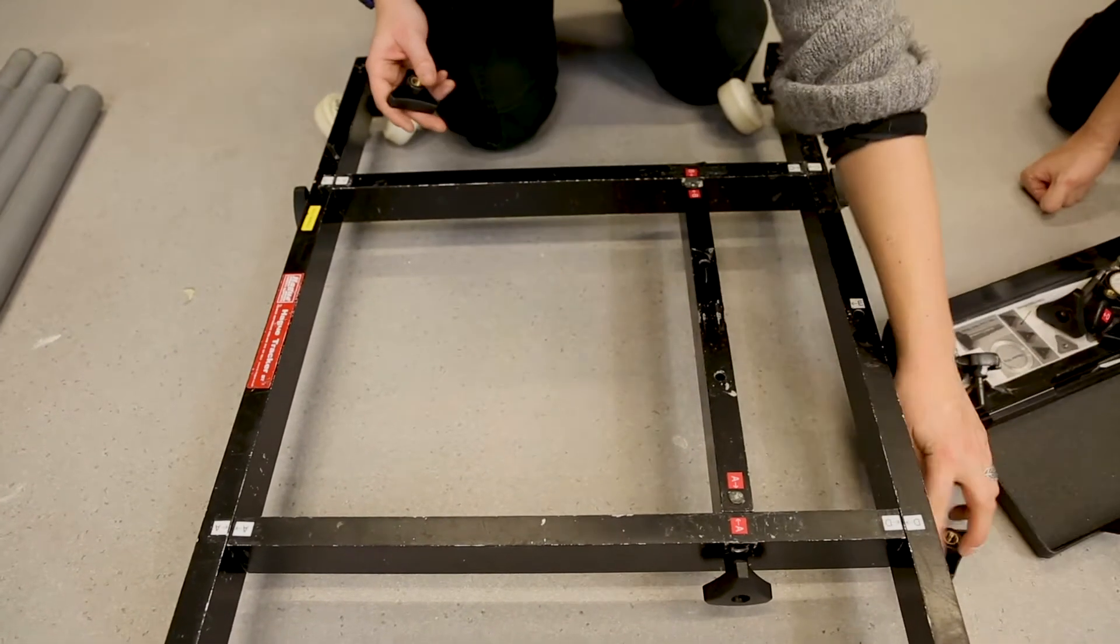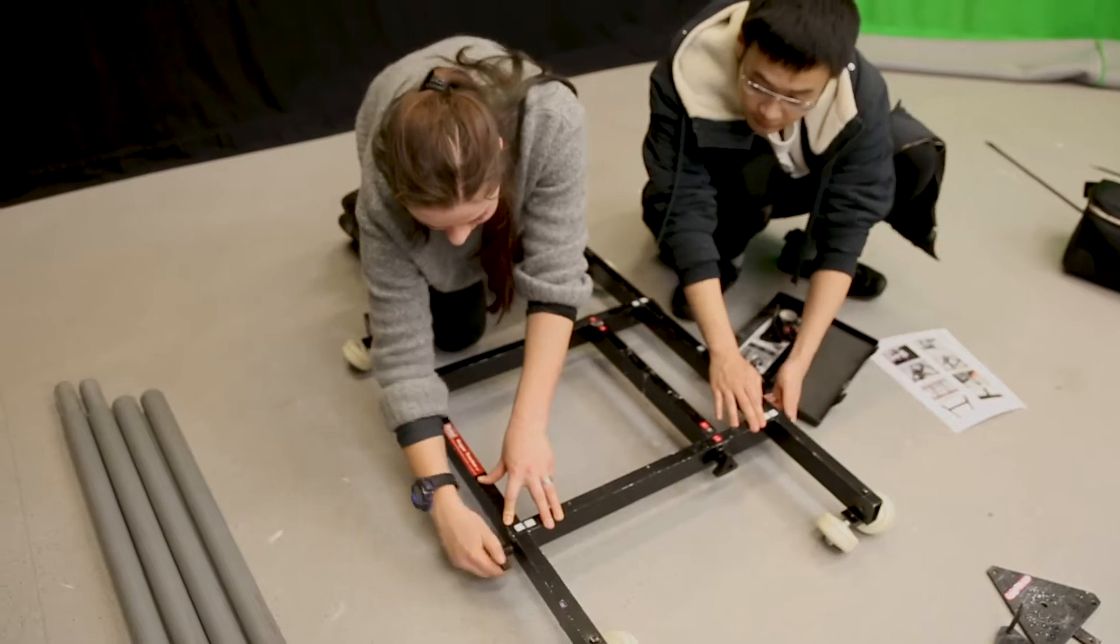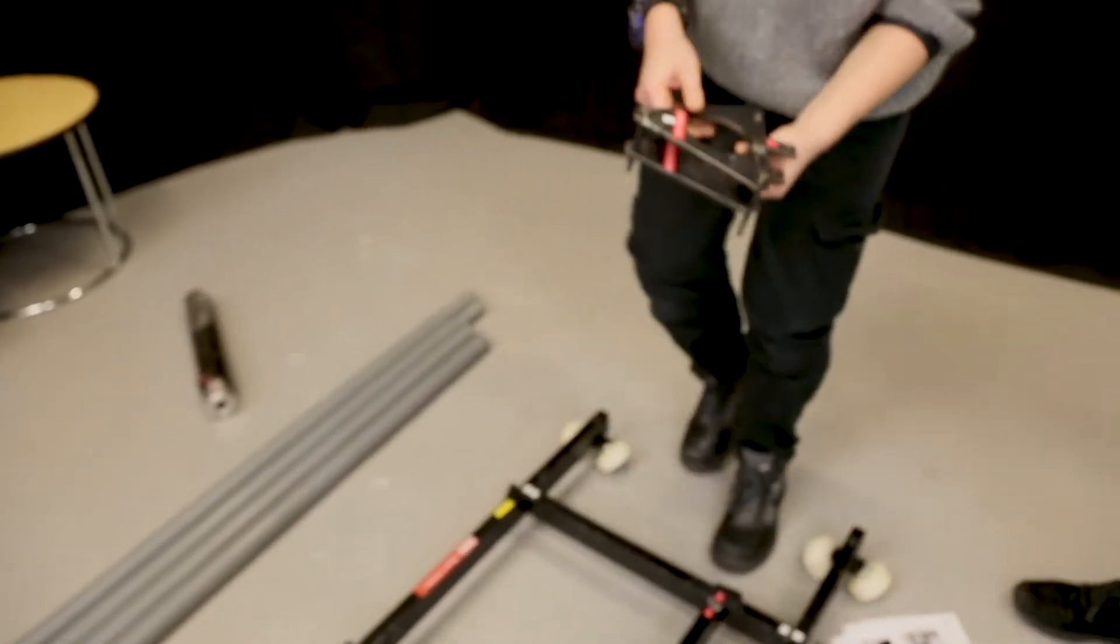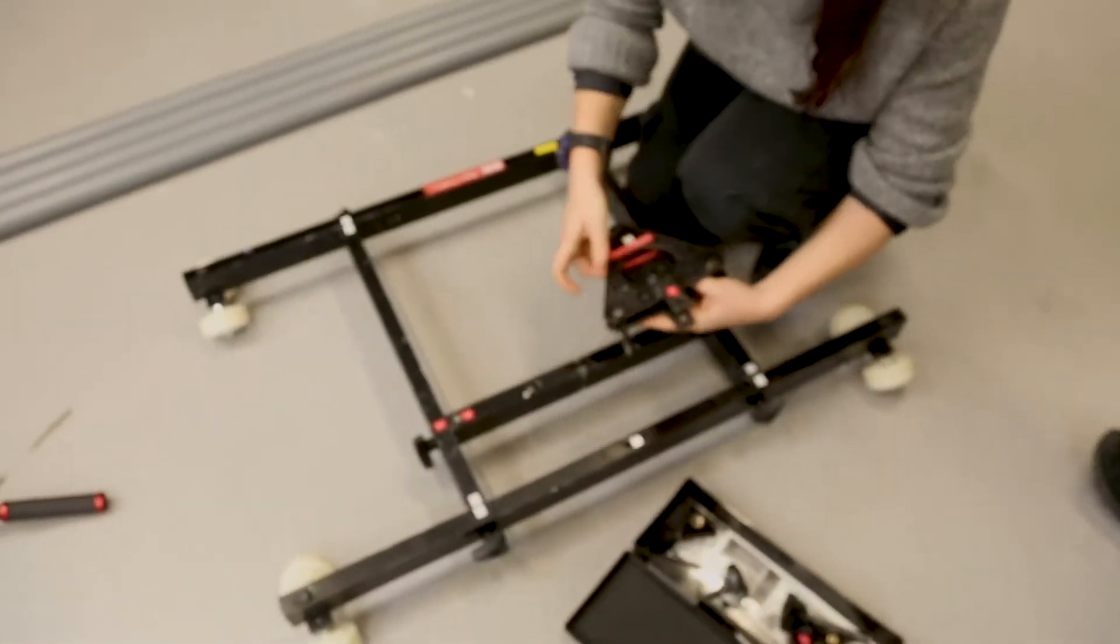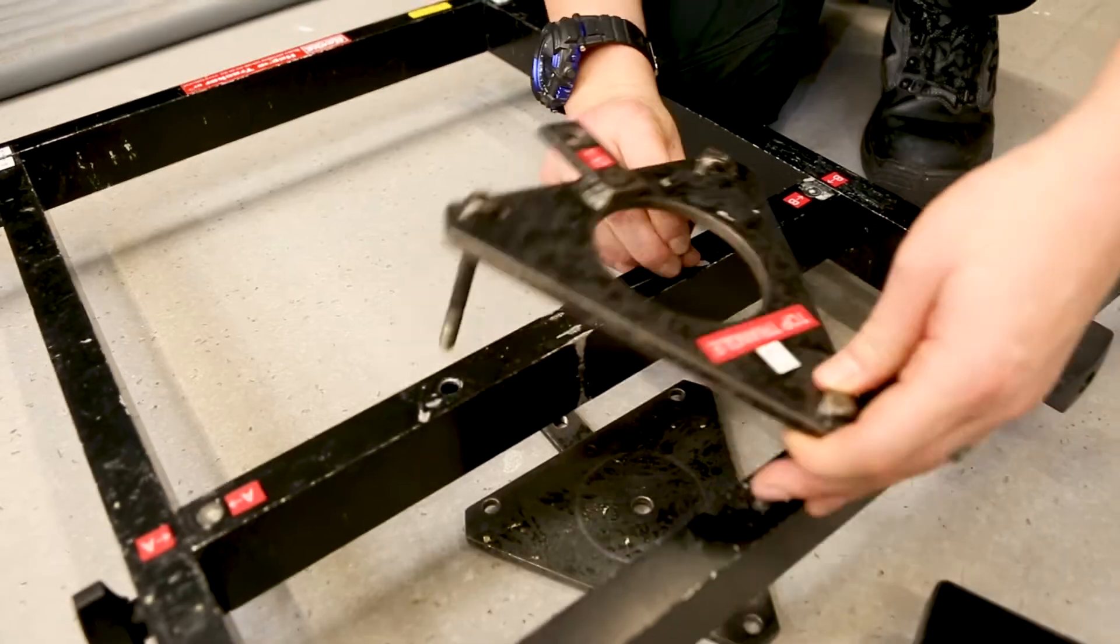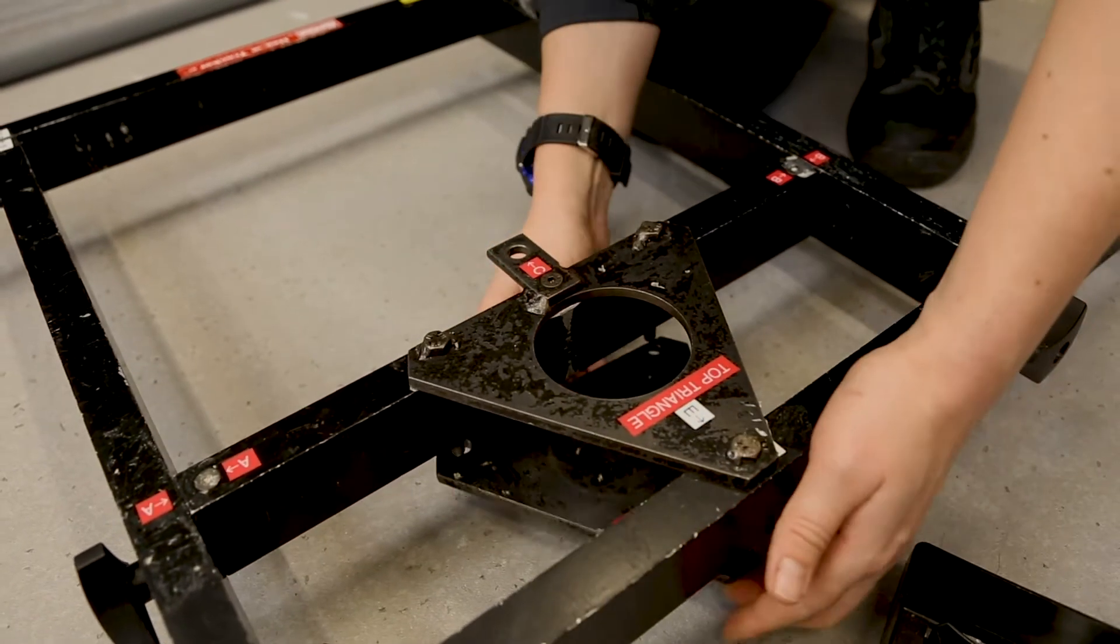Now use all the hand wheels in the box to secure all the sides. Grab two triangle plates, one will have the label saying top triangle and the other bottom triangle. Insert the top triangle first into the mainframe and then the second plate underneath.